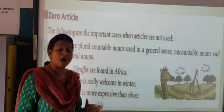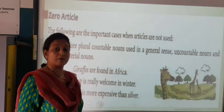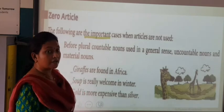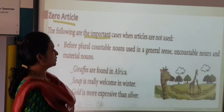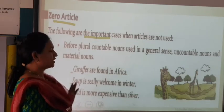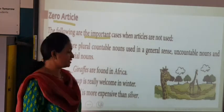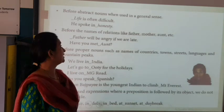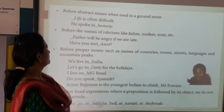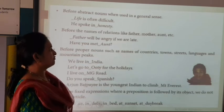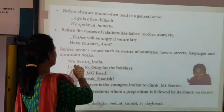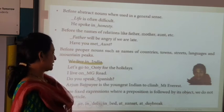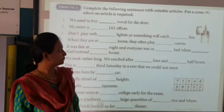Zero article — that means where there is no need to put any article. It is not that every word needs an article. There are some cases where you don't put any article, and we call it zero article. Before plural countable nouns in a general sense: 'Giraffes are found in Africa.' 'Soup is really welcome in winter.' Before abstract nouns — which you cannot touch and see, but can feel: 'Life is often difficult.' 'He spoke in honesty.' Before the names of relations like father, mother: 'Father will be angry if we are late.' Before proper nouns: 'We live in India', 'I live on MG Road.' In some fixed expressions where a preposition is followed by its object: 'at sunset', 'at daybreak'.